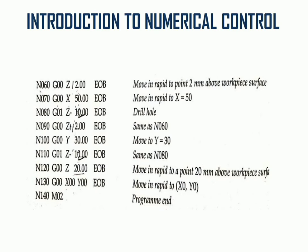Then instruction block N11: take the tool downwards Z minus 12 EOB for drilling the hole at that point. Next, rapid traverse to move the tool out of the job, Z plus 20 mm, and move the tool back to the origin so the job can be easily removed from the job-holding device. Finally, end the program with M02 at the last instruction block. That's all about today's program — thank you very much.